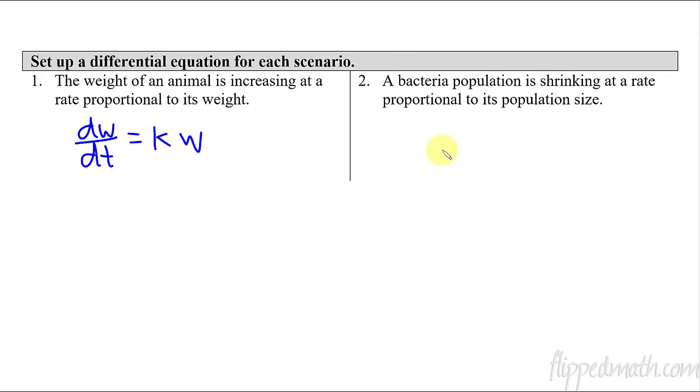So, here we have bacteria of a population. Let's call population is just going to be p. So, I'm going to call this dp dt. It is shrinking at a rate proportional to its population size. So, it's shrinking. This is the rate that it's shrinking. And it's proportional, so it's k, to the population size p. And in this case, k is going to end up being negative because it's shrinking. So, if we could figure out what k is, we know it will be negative. So, that's just setting it up. It's making sure you recognize how to set these up and then knowing this is exponential growth or decay.